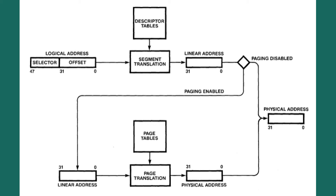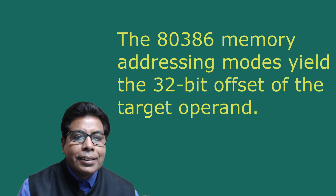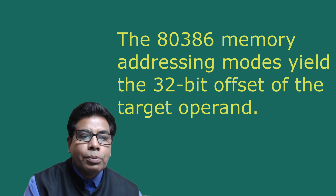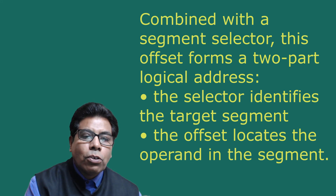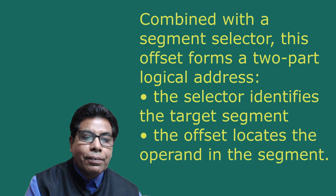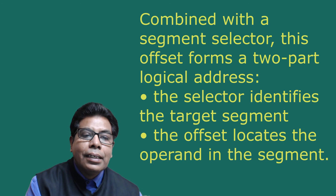If paging is enabled, the 80386 translates the linear address into a physical address using page translation, done with the aid of page tables. The 80386 memory addressing modes yield the 32-bit offset of the target operand. Combined with a segment selector, this offset forms a two-part logical address. The selector identifies the target segment and the offset locates the operand in the segment.